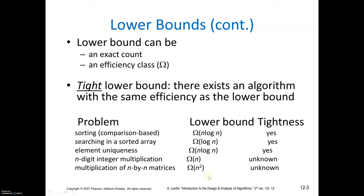But for multiplying two n-digit integers, if the stated lower bound is n, is it tight? No, because we don't know any algorithm that can multiply two n-digit integers with only n computations. Similarly, we don't know any algorithm that can multiply two n-by-n matrices with only n² computations.